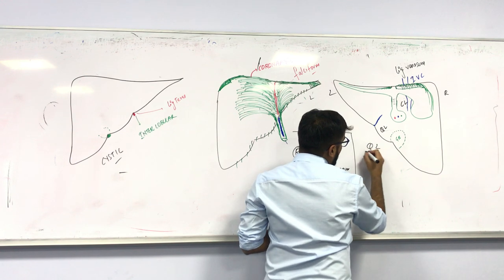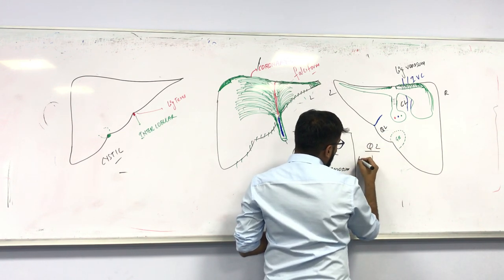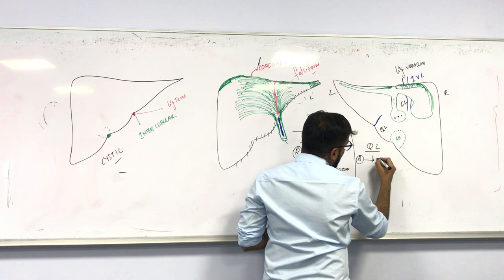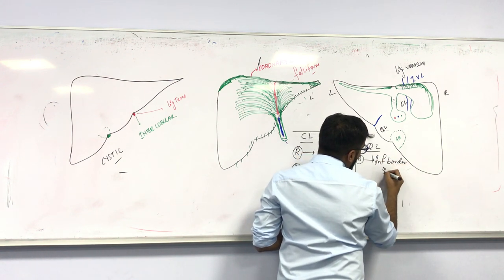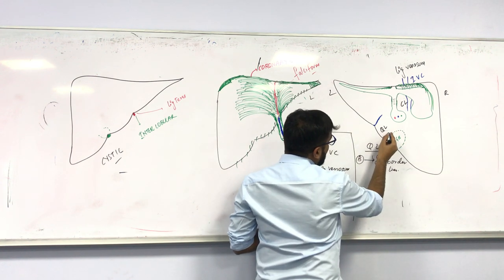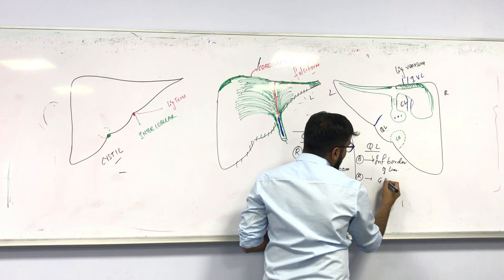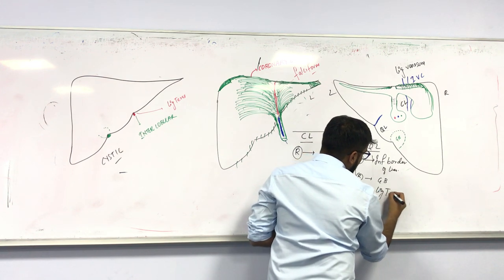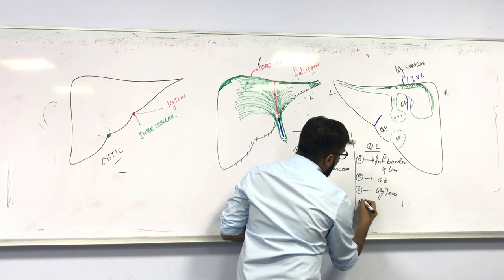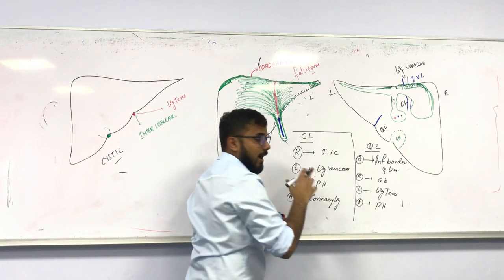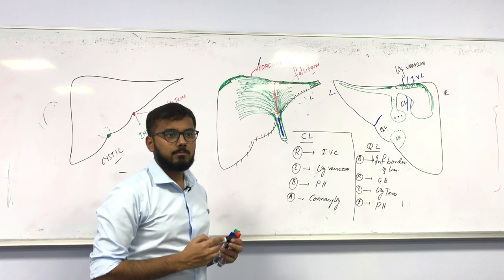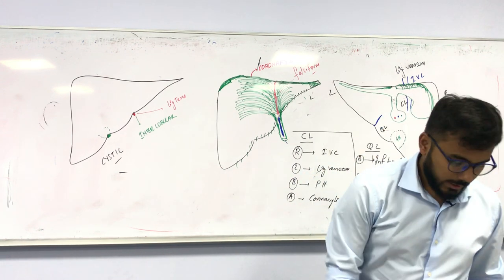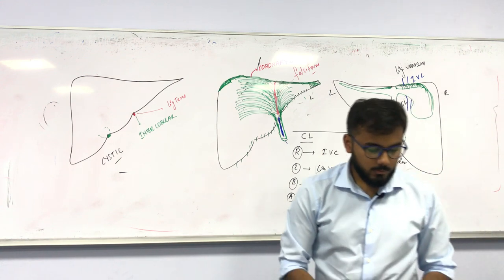The borders of the quadrate lobe are: the inferior border of the liver below, the gallbladder on the right, ligamentum teres on the left, and porta hepatis above. These borders are very important to know.